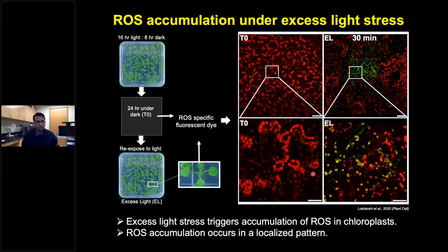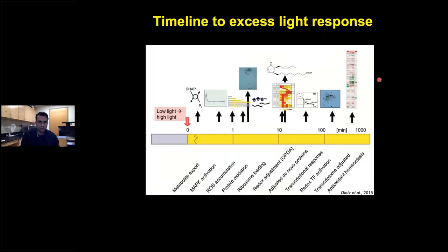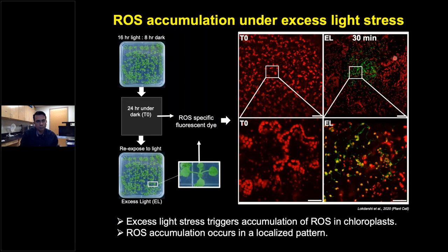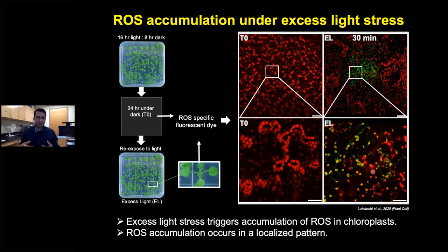Arabidopsis seedlings grown on a 16-hour light / 8-hour dark period, dark-adapted for 24 hours, show hardly any signal when stained with a ROS-sensitive dye. However, when re-exposed to light, within 30 minutes you can see accumulation of reactive oxygen species in a localized fashion. Zooming in, most of this ROS accumulation is happening inside the chloroplast, as shown by the yellow color, suggesting that excess light stress triggers ROS accumulation specifically in the chloroplast.